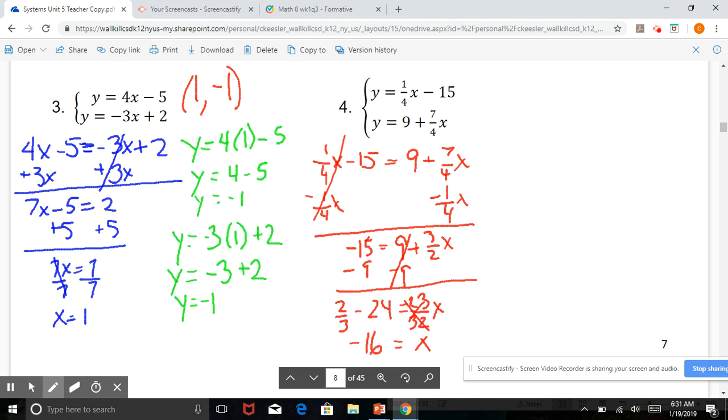Now we're going to take the negative 16, plug it in to find the corresponding y values. So y equals 1 4th of negative 16 minus 15. Negative 16 divided by 4 is negative 4, times 1, stays as negative 4, minus 15. So y equals negative 19.